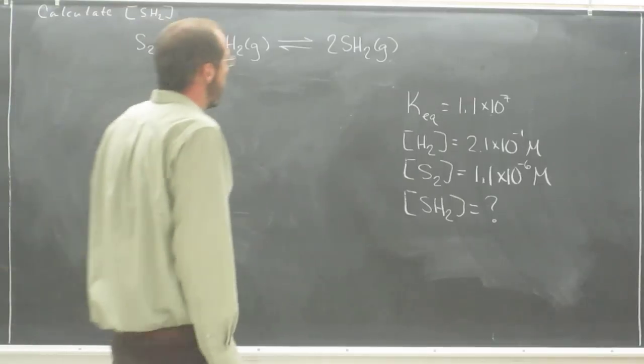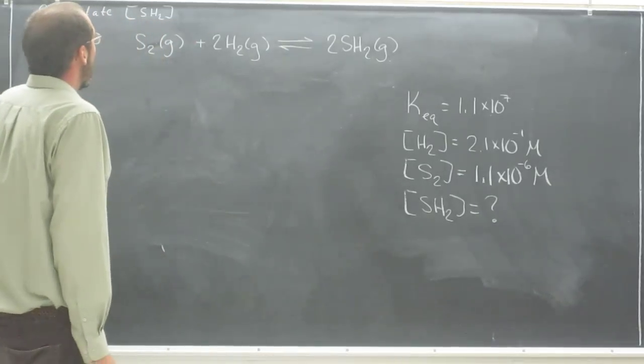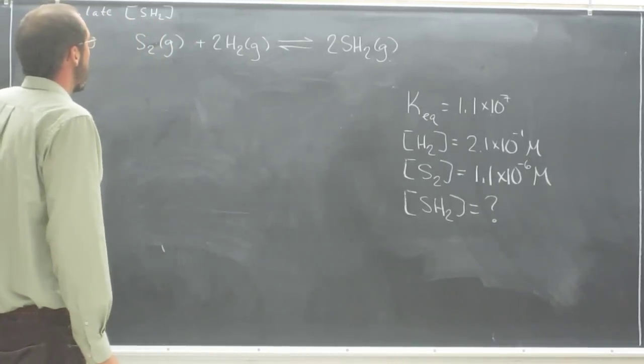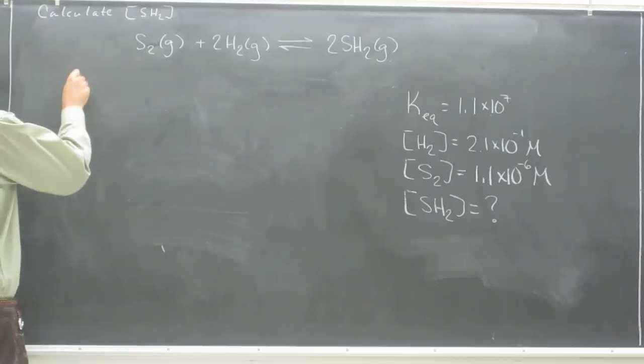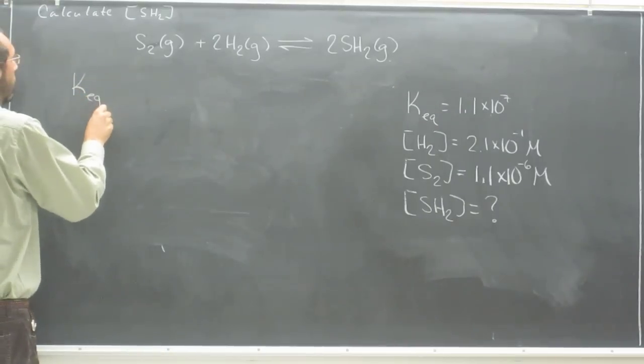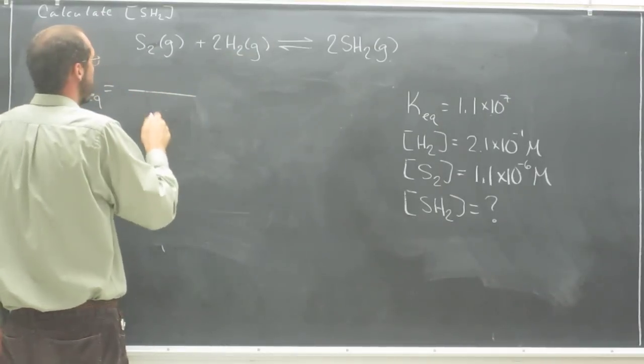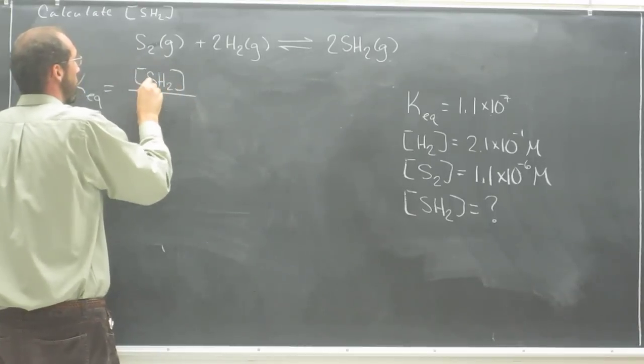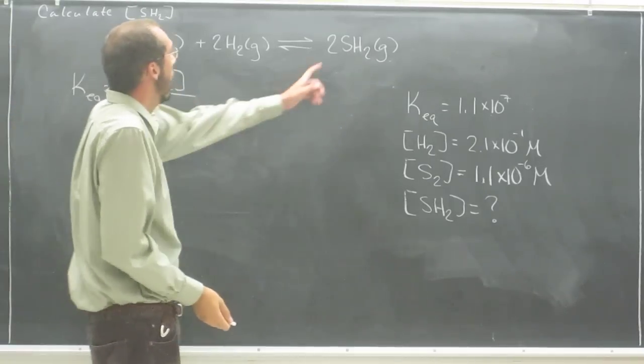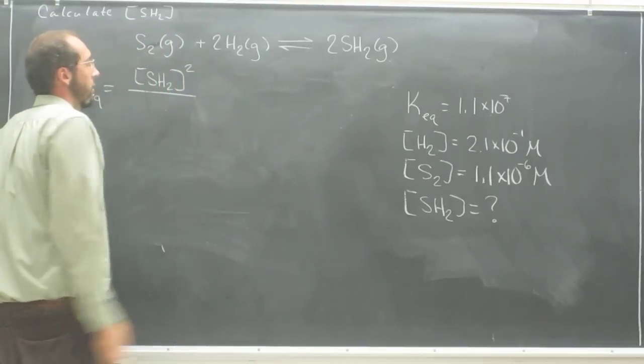If we know all of this information and that the equilibrium expression is shown, the first thing you're going to need to do is calculate the Keq. That's going to be the products over the reactants, in this case SH2, concentration of SH2. Since there's a 2 in front of that, you're going to put squared there.